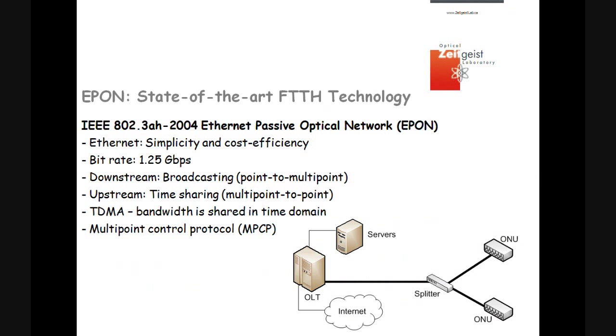As a state-of-the-art FTTH technology, we consider Ethernet passive optical network, which applies Ethernet frames and provides a symmetric 1.25 Gbps bit rate and 1 Gbps data rate. As shown in the figure, typically an EPON has a physical tree topology with the optical line terminal located at the root and the subscribers connected to the leaf nodes of the tree.